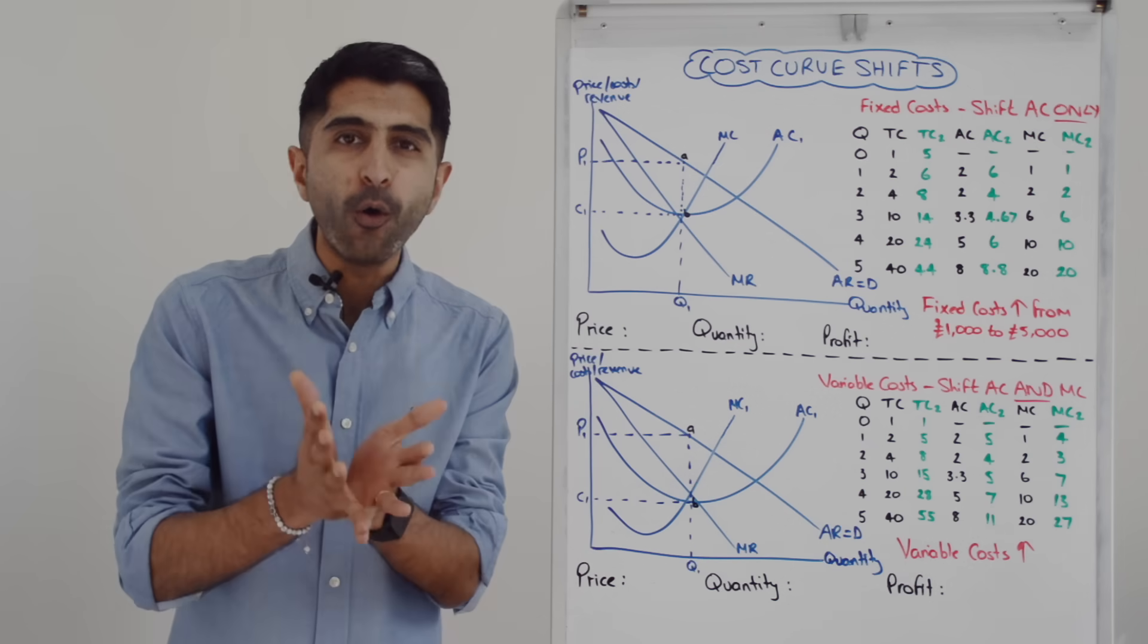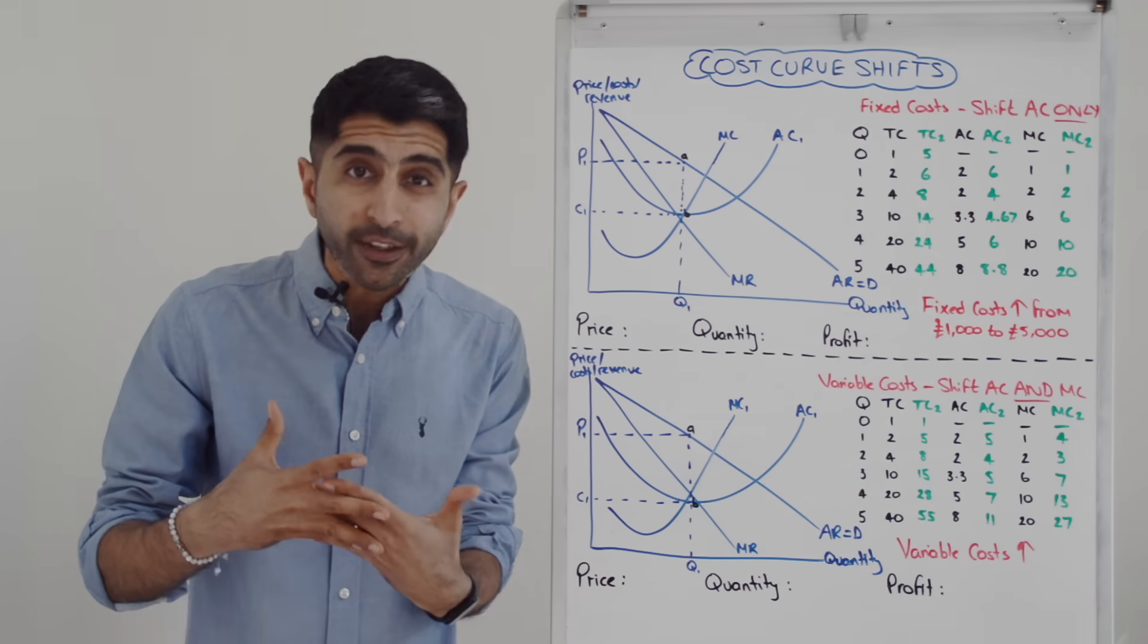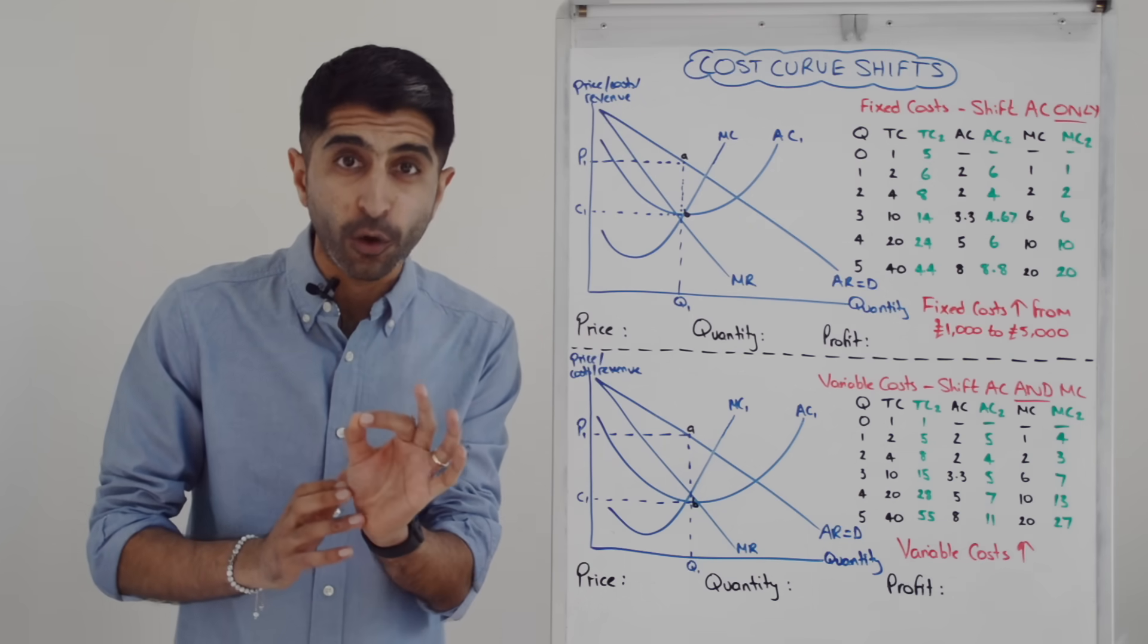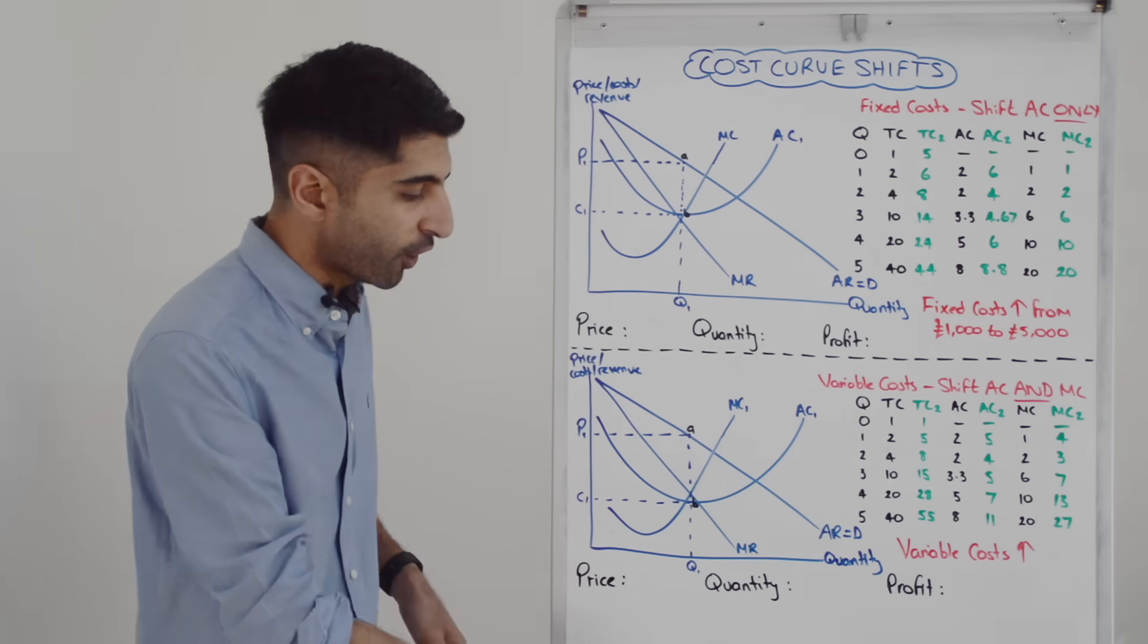And the reason why it's only the AC curve that shifts is because whenever fixed costs change, there is no change in the rate of change of total costs, i.e. there is no change in marginal costs.